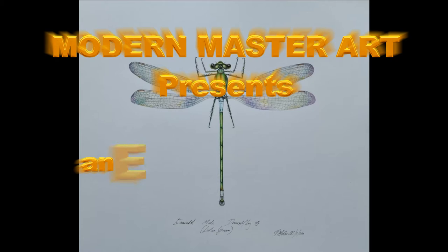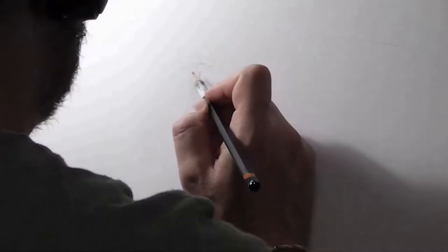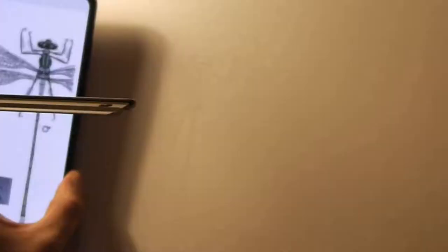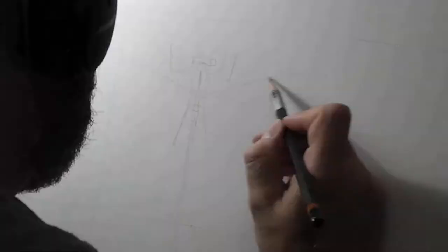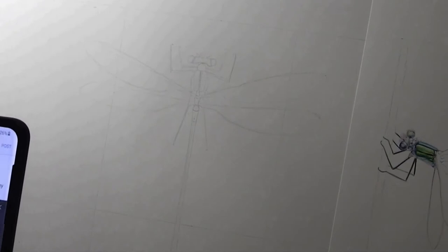Hello, this is Modern Master Art and this is my drawing of an emerald damselfly. This took me quite a bit longer than I thought it would for a drawing of this size, and I'll explain the reasons why in a second. But you'll probably see on the right a little unfinished damselfly pops up.